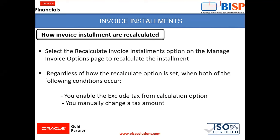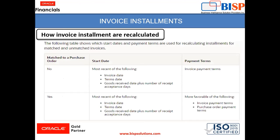Now, how are invoice installments recalculated? If you want to recalculate your invoice installment, you can go to the Manage Invoice Options page and enable the recalculate invoice installment option. Alternatively, when both of the following conditions occur — you have enabled the exclude tax from calculation option and you have manually changed the tax amount — your invoice installments also get recalculated.